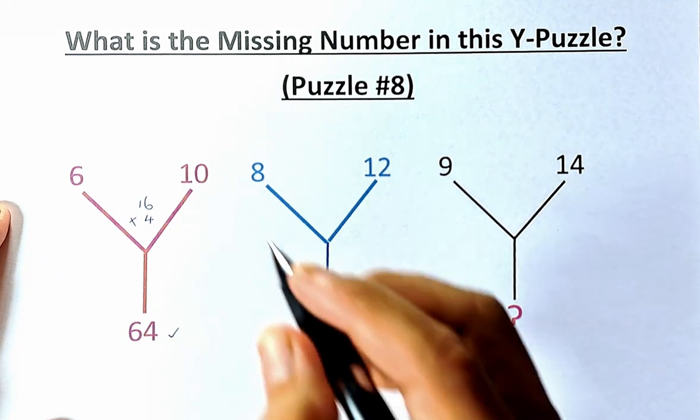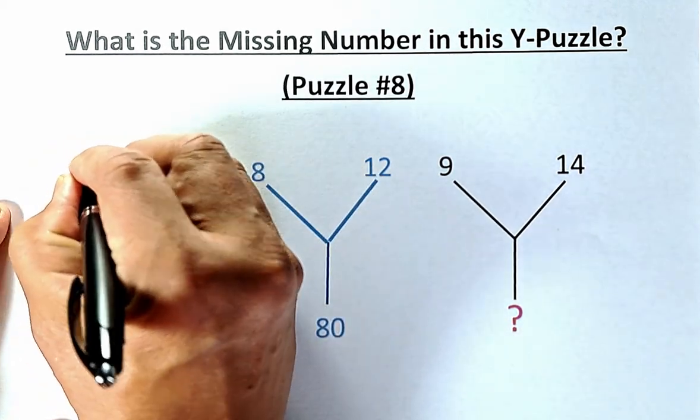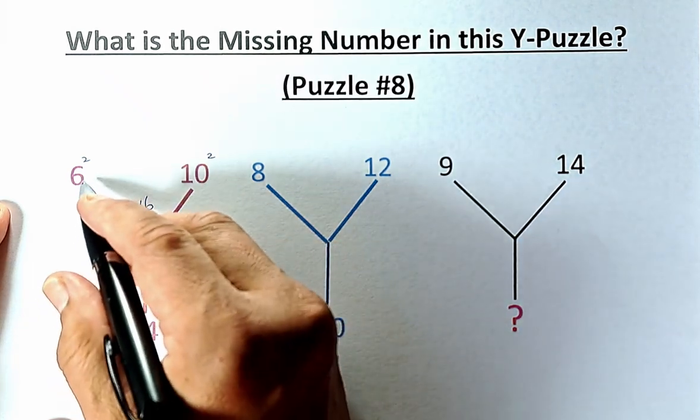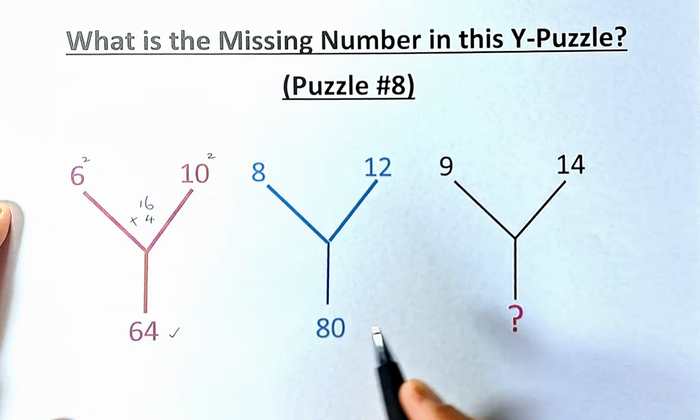The other way to do this is you take 10 squared minus 6 squared. 10 squared is 100 minus 36 which is 64. So there are 2 ways to do it.